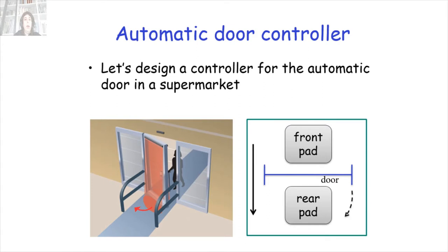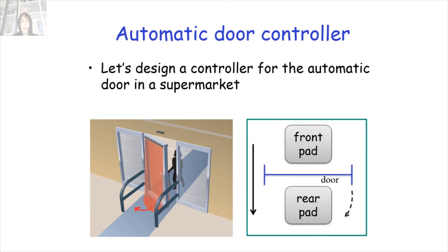During the lecture, several students asked me to solve the automatic door controller example. So let's see what we are talking about — an automatic door in a supermarket. This door should be independent and automatic. Therefore, when someone is on the front pad, the door should open, but without damaging someone standing at the rear pad.